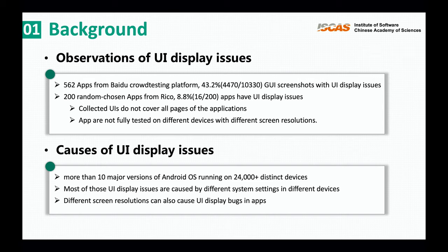In this work, we aim at detecting UI display issues with screenshots generated during automatic testing by visual understanding. To understand common UI rendering issues, we first carried out a pilot study on screenshots from 562 mobile applications. Results show that 43% of screenshots have UI display issues, which can seriously impact user experience. We also manually checked screenshots from 200 applications in the RICO dataset and found 16 applications with UI display issues.